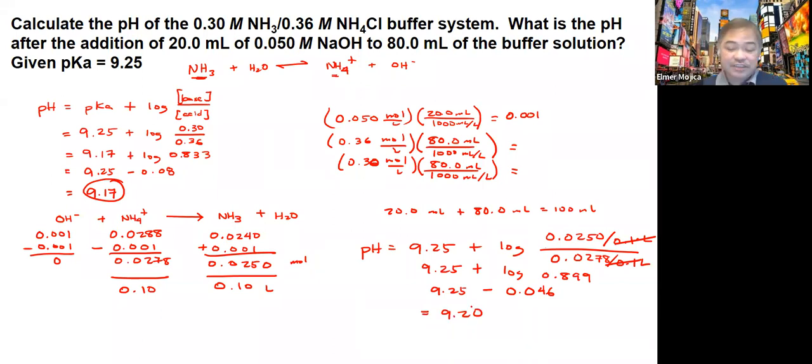You may ask yourself, is this correct? Since you add hydroxide, which is a base, you expect the 9.17 to become 9.20.